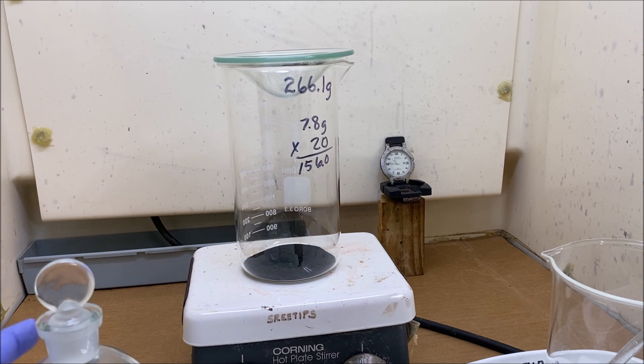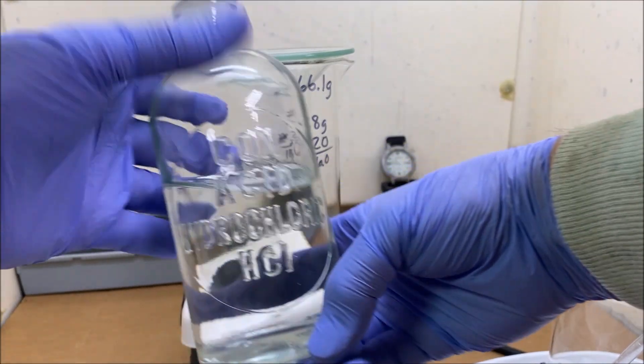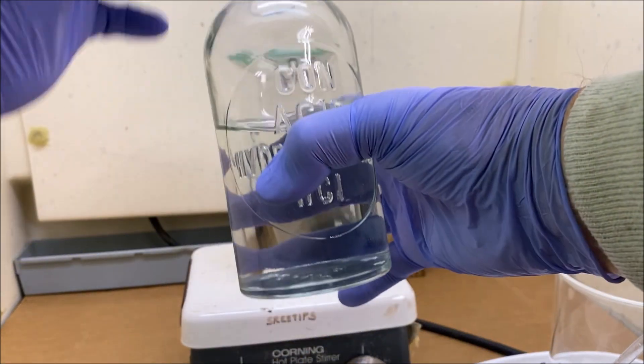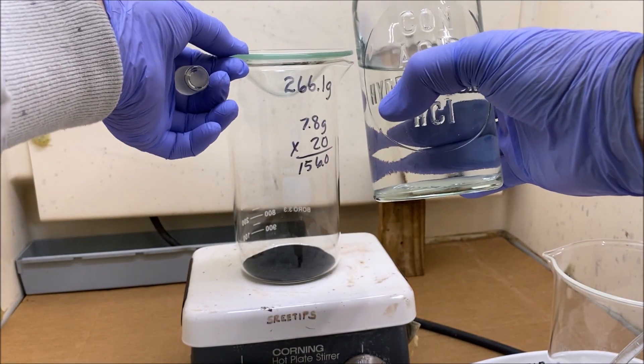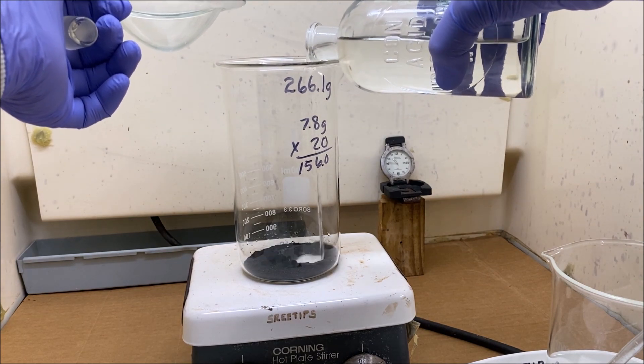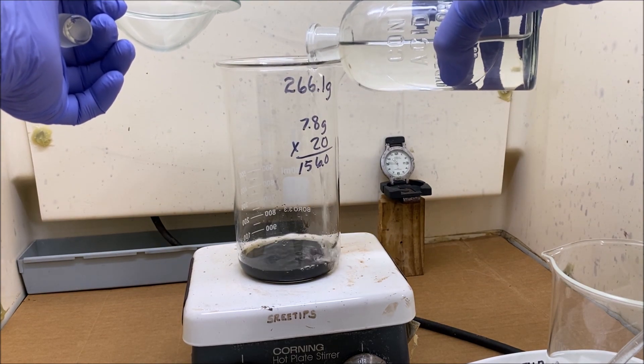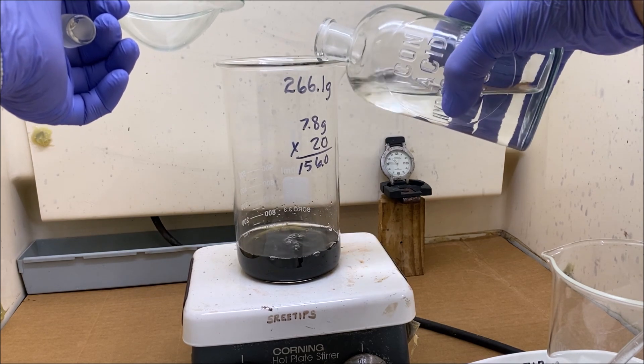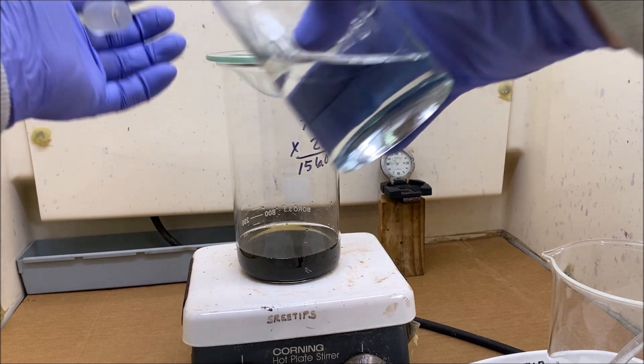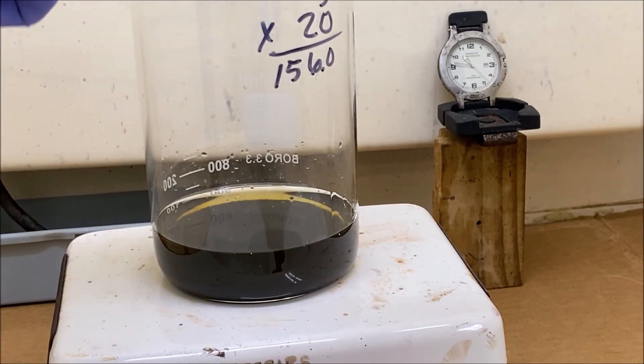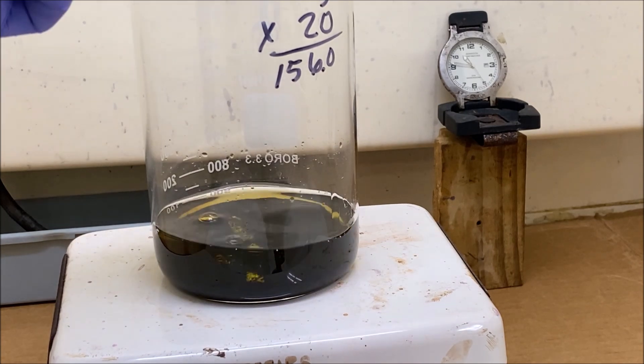Welcome back to part 4 of the dental scrap recovery and refining. I'm adding some hydrochloric acid to our mixed black PGM powders in here. I've got a stir bar. I'm going to drop that in and start the stirring.